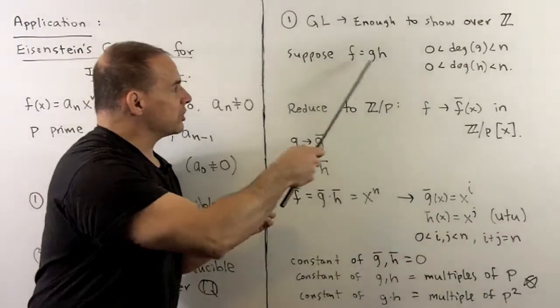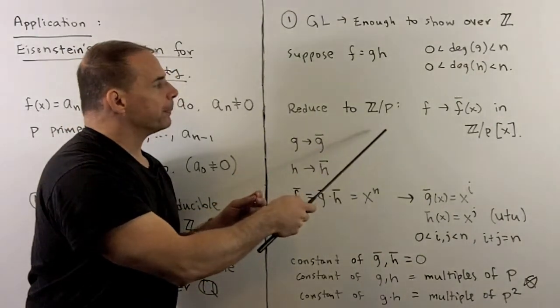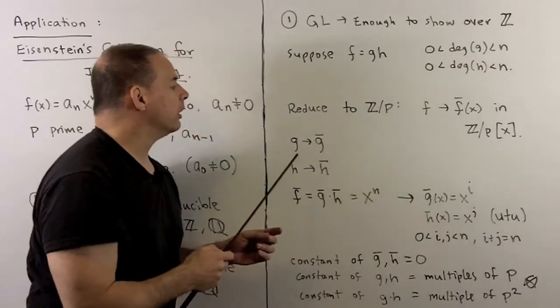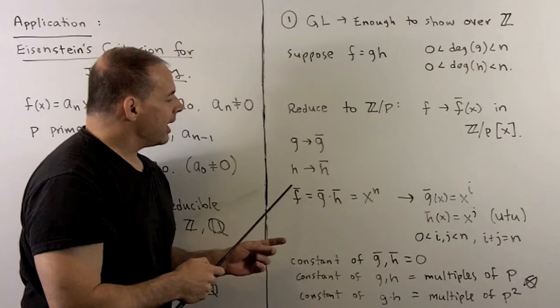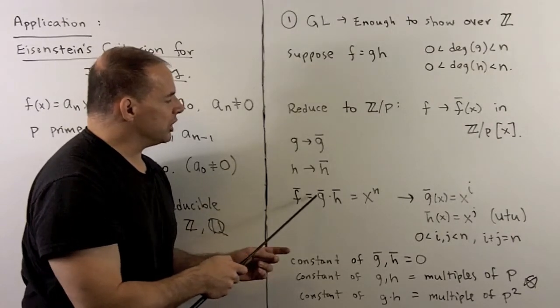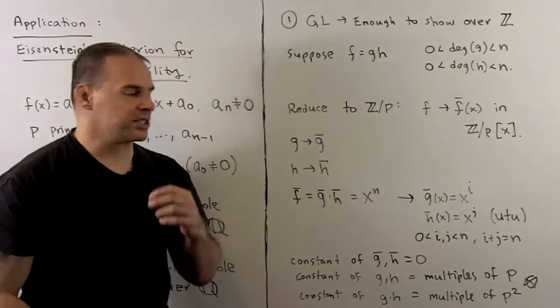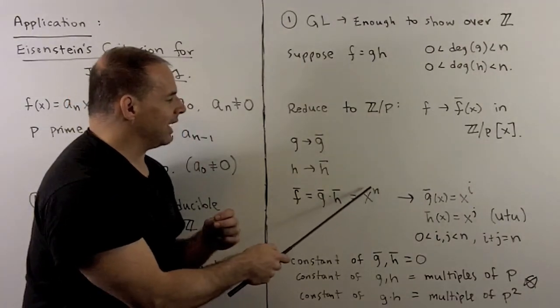If we reduce this equation modulo p, so now we're going to be working over Z mod p adjoin x. g goes to ḡ, h goes to h̄, f̄ is going to equal ḡ times h̄. Because we have p divides all the coefficients except for the lead one, we get x to the n.